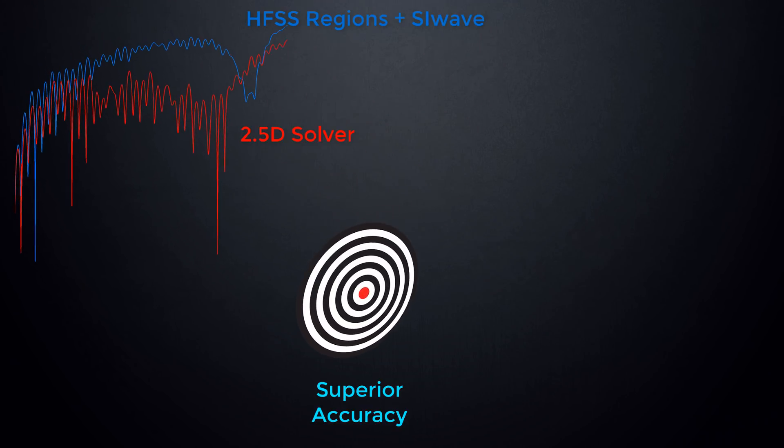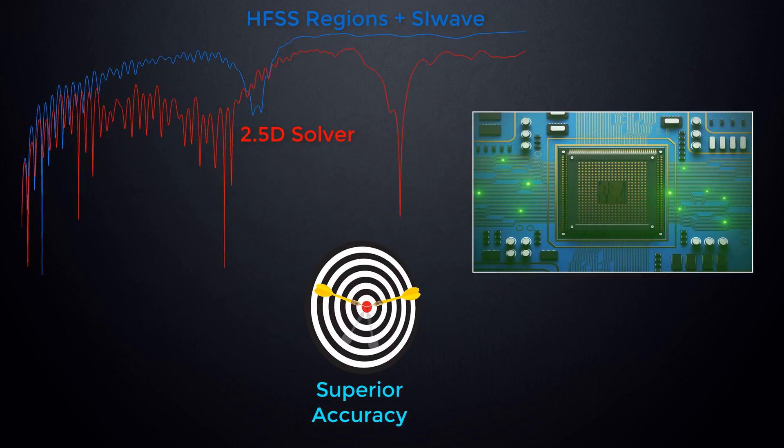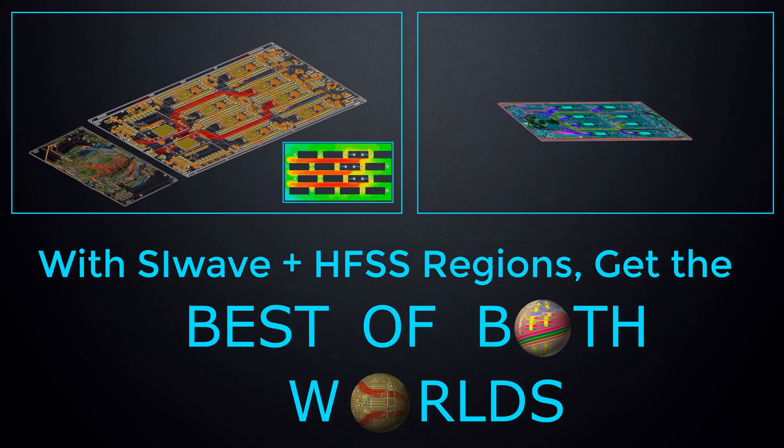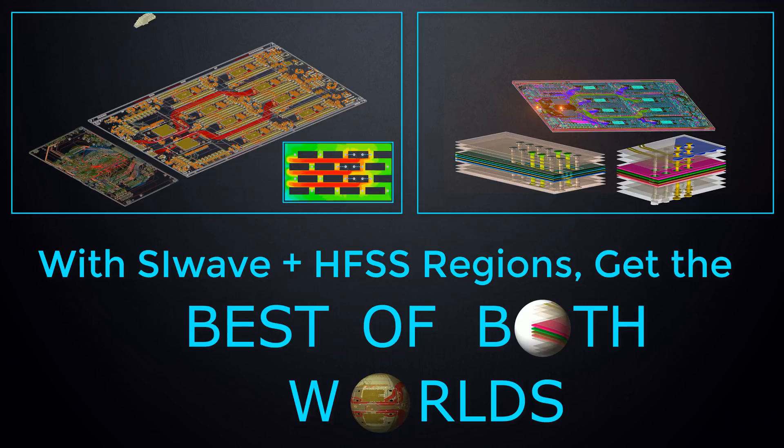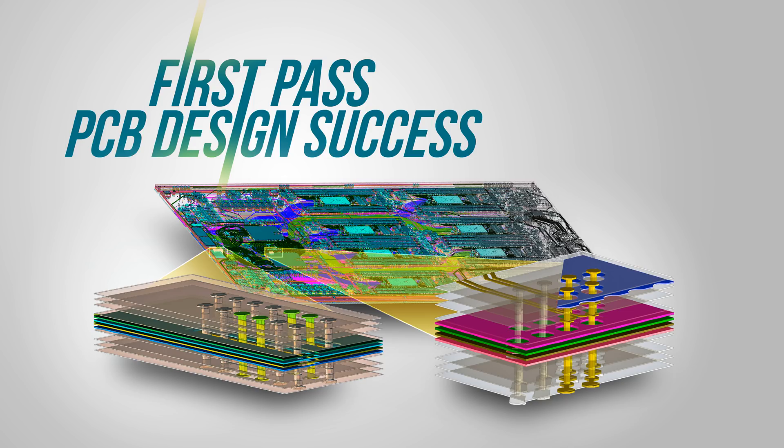With more accurate electromagnetic extraction methods, designers can precisely judge the signal integrity of high-speed electronic systems. HFSS Regions in SI-Wave properly identifies impedance discontinuities and provides superior accuracy for predicting channel response while keeping simulation time to a minimum.